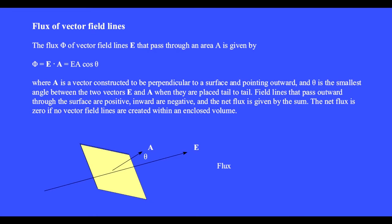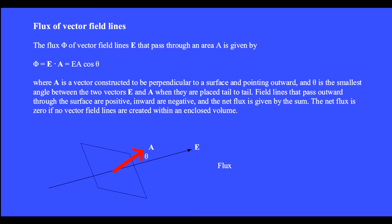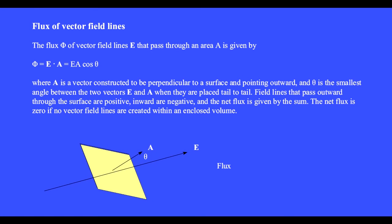For any area A, we construct a vector A that is perpendicular to that area. The electric field vector E passes through that area, making an angle theta relative to the area vector, which is perpendicular to the area. The flux of vector field lines passing through an area is given by phi equals vector E dot vector A, which has magnitude E times A times cosine theta, where theta is the smallest angle between the two vectors A and E when placed tail to tail.